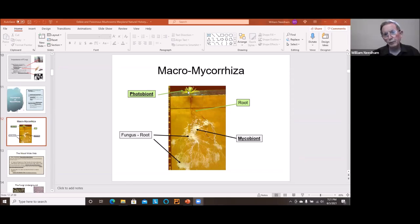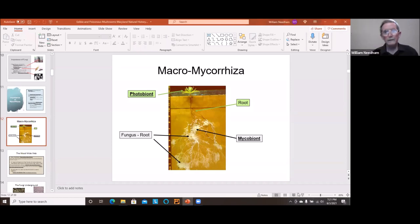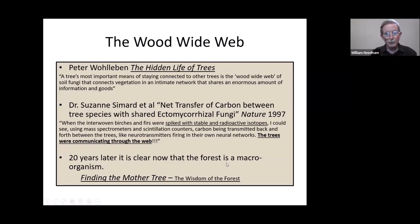If you look at the plant at the top — the photobiont — these are the roots, and these are the fungal part of the roots, the mycorrhizae. You can see it extends the root system and connects to other root systems through the fungal network. This is Dr. Suzanne Simard — this is the whole 'wood wide web' concept. You may have heard of 'The Hidden Life of Trees' that came out about 10 years ago. The whole idea is that the forest is really a living, breathing thing, and fungi are an important part of it.